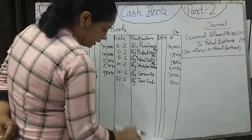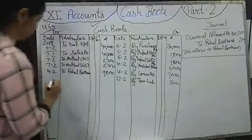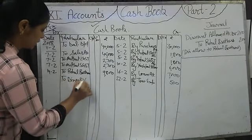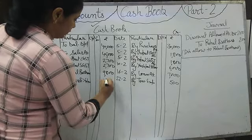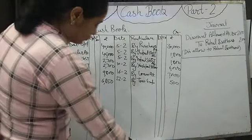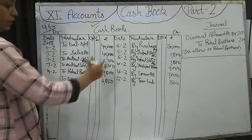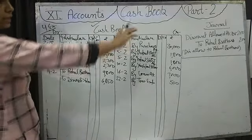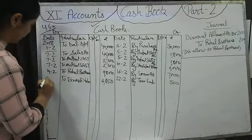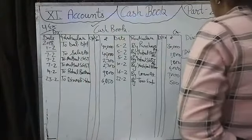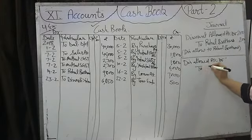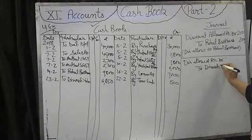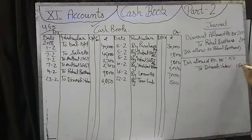Next transaction on 23rd February: received from Dinesh Yadav. We are receiving money — Rs. 6,850. We are allowing a discount of Rs. 150 to Dinesh Yadav. That we will not write in the cash book; we pass a journal entry same as before. Date: 23rd February. Discount Allowed Account Debit to Dinesh Yadav, amount Rs. 150.